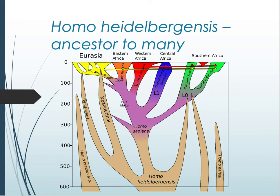We think Homo heidelbergensis, as it traveled outside of Africa, was isolated long enough to evolve into different species. Homo heidelbergensis in Africa evolved into Homo sapiens, which would ultimately leave Africa and populate the earth. Homo heidelbergensis that traveled into Europe and possibly got stuck there due to glaciations would evolve into Neanderthals. Homo Denisovans are an Asian species, primarily known from samples from Siberia. Homo heidelbergensis is believed to be ancestral to all of these distinct species.